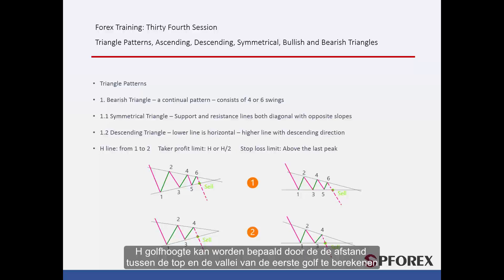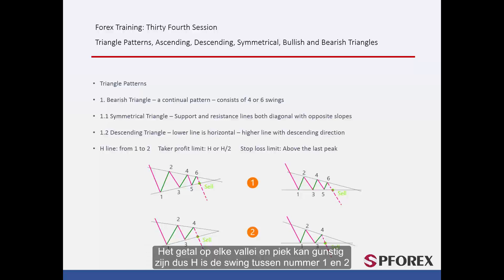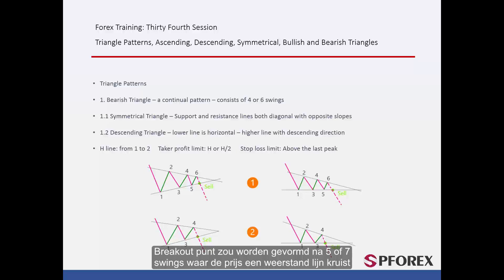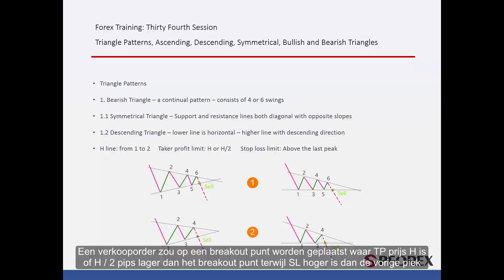H, the wave height, can be determined by calculating the distance between the peak and valley of the first wave — that is, the swing between number 1 and 2. The breakout point forms after 5 or 7 swings, where price crosses the resistance line. A sell order is placed on the breakout point, where the TP price is H or H/2 pips lower than the breakout point, while the SL is higher than the last peak.